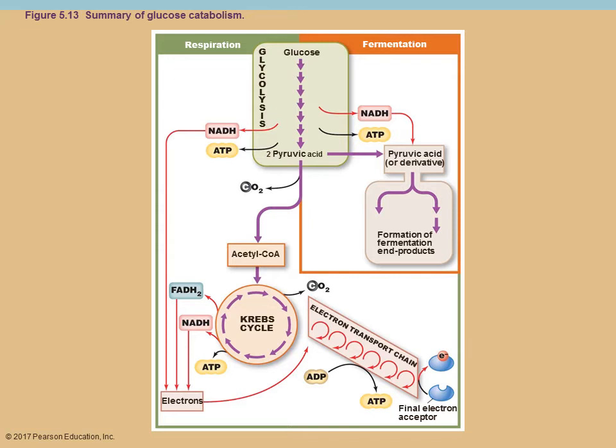This summary sheet compares respiration and fermentation. Both start with glucose and in a series of steps called glycolysis you take glucose and break it down. Glucose is a six-carbon sugar. You break it down in glycolysis and end up with two molecules of pyruvic acid, which is a three-carbon compound. You must account for all atoms — all carbons, oxygens, and hydrogens — so because you started with six carbons and pyruvic acid has three carbons, you must have two molecules.